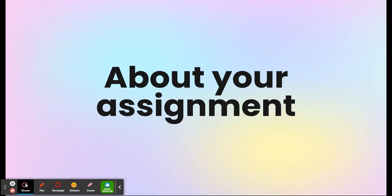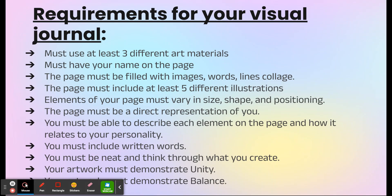Now about your assignment. There are requirements for your visual journal — I'm not going to give you complete and total free reign. You must use at least three different art materials. You must have your name on the page — it is a journal about you, include your name. It must be filled with images, words, lines, collage, etc. All of these must relate to you. This is a page about you.